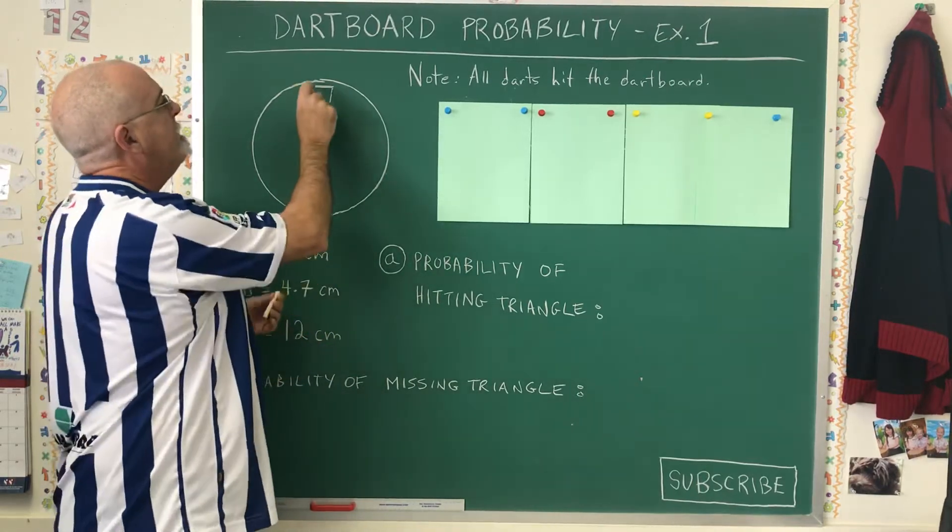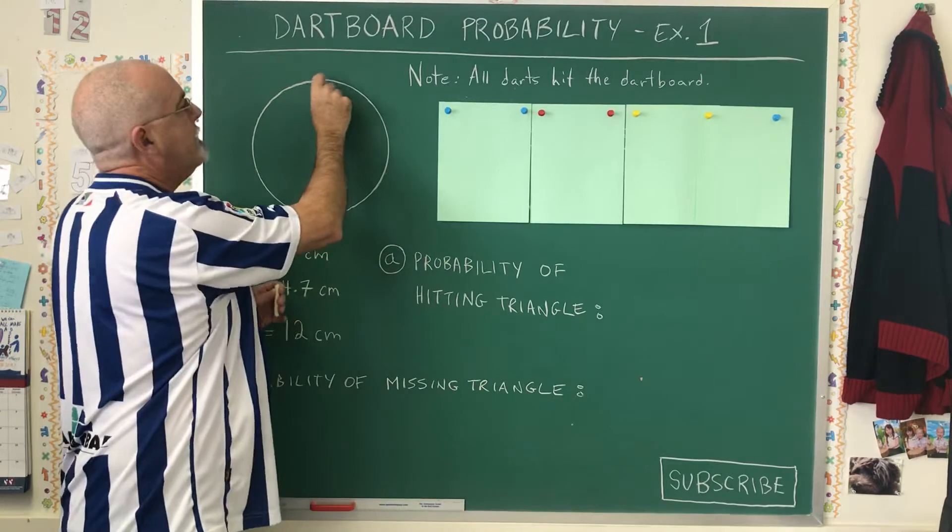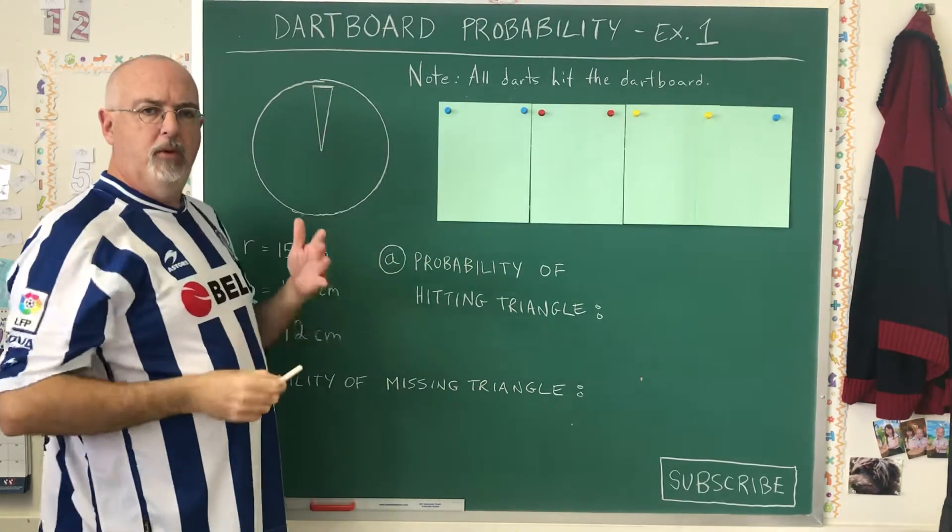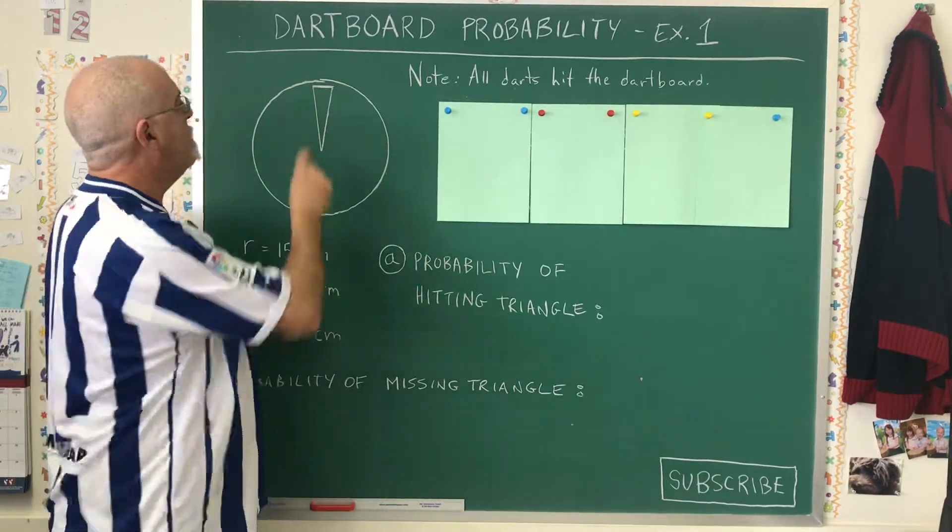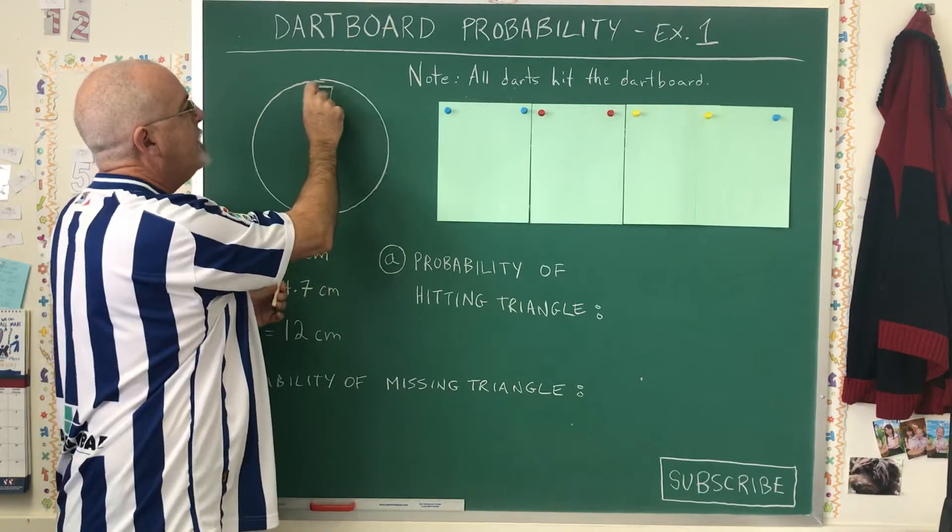except that the 20 on the dartboard—this part—is actually an arc. But that would be more complicated to calculate the area of, so I've used a triangle and put a little straight line there.